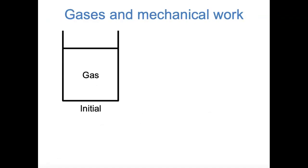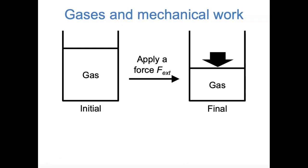Imagine we have a macroscopic sample of a gas in a sealed container with a piston on top. The gas has some initial pressure, volume, and temperature. Then to that sample we apply some external force, F external. That force may be atmospheric pressure or it may be a weight that you put on the piston. We end up with a smaller volume of gas—the piston has gone down—and we now have some final volume that's less than the initial volume.